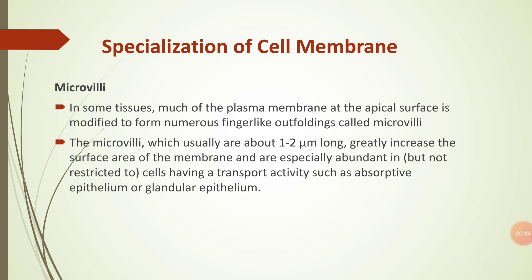In the intestinal epithelium, microvilli are very prominent and form a compact structure that appears under the light microscope as a straight border. In some tissues, much of the plasma membrane at the apical surface is modified to form numerous finger-like outfoldings called microvilli, which are usually about 1 to 2 µm long.